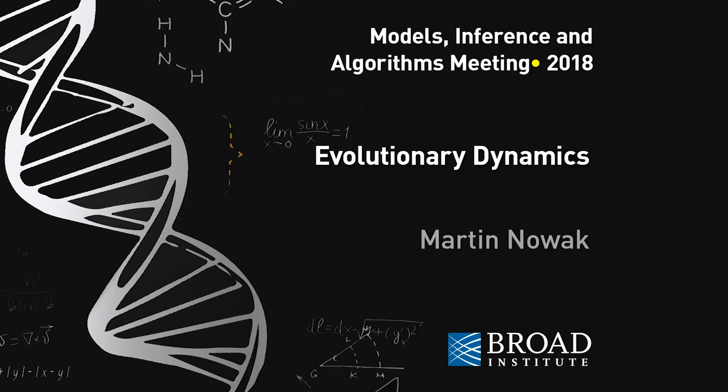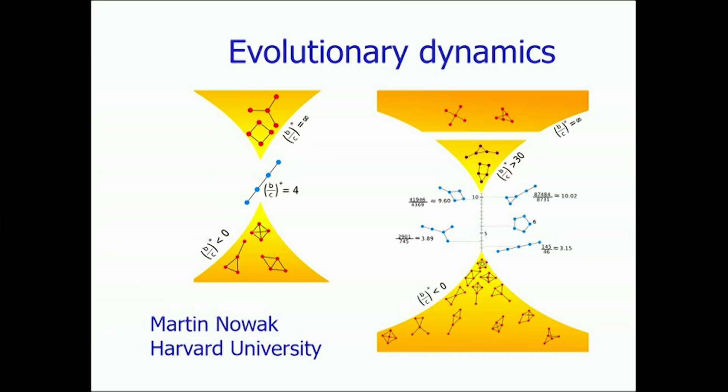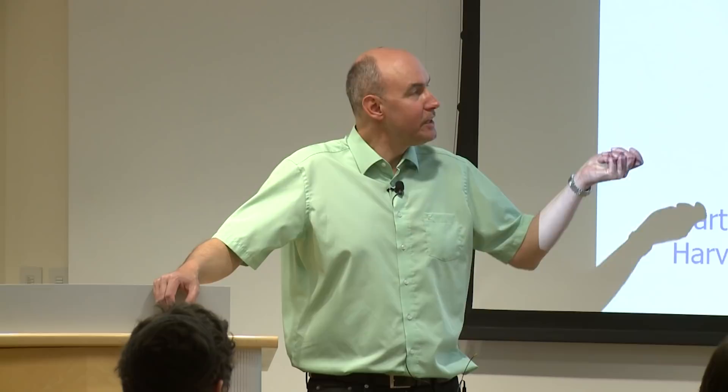The title of my talk is Evolutionary Dynamics. What fascinates me about evolution is the ability to describe it mathematically. In my opinion, evolution has very much become a mathematical theory and can really be best formulated with mathematical equations. A quantitative understanding of evolution requires the mathematical formulation, and this is what I wish the field of evolutionary dynamics to be: the mathematical exploration of the evolutionary process.